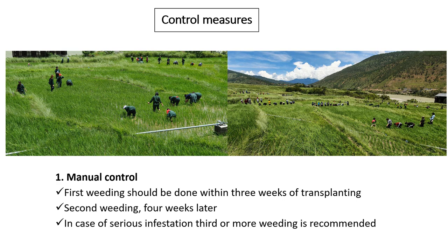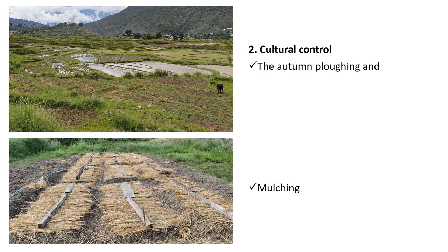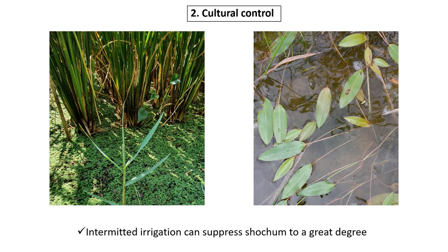Control measures: Although it is a difficult weed, it can be manually controlled. First weeding should be done within 3 weeks of transplanting. Second weeding should be done 4 weeks after the first weeding. In case of serious infestation, a third or more weeding is recommended. Cultural control: Autumn plowing and mulching can have a greater impact on suppression of the weed. For example, mulching with barley straw can reduce the population of Shokchum by up to 40%. It can also be controlled by intermediate irrigation.